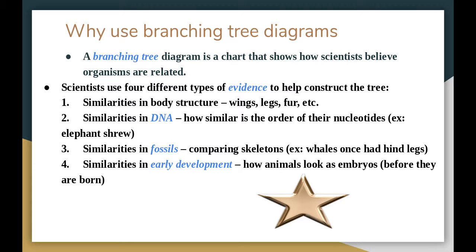So why use branching tree diagrams? A branching tree diagram is a chart that shows how organisms are related — like a family tree. If you were to create a family tree, you'd be at the top, then going down you'd reach your parents, then your grandparents, then great-grandparents, great aunts, great uncles, and so on.